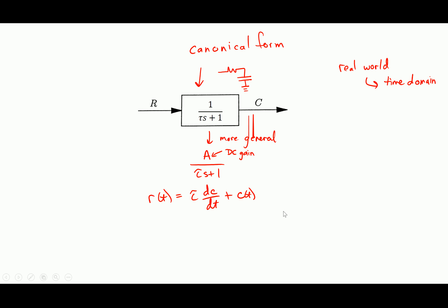The input is equal to the output plus a term related to the rate of change of the output. So in steady state, R of T is going to equal C of T. The derivative term is gone. In the Laplace domain, as T goes to infinity, it's sort of the same as S goes to 0. If S goes to 0, this thing becomes a gain of 1, and output equals input. That's why we use the term DC gain.